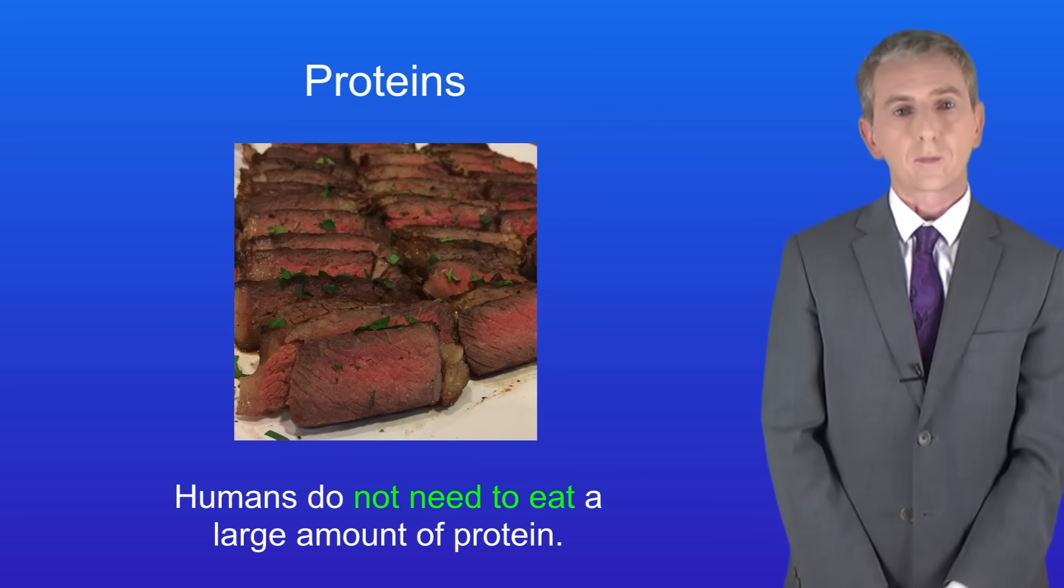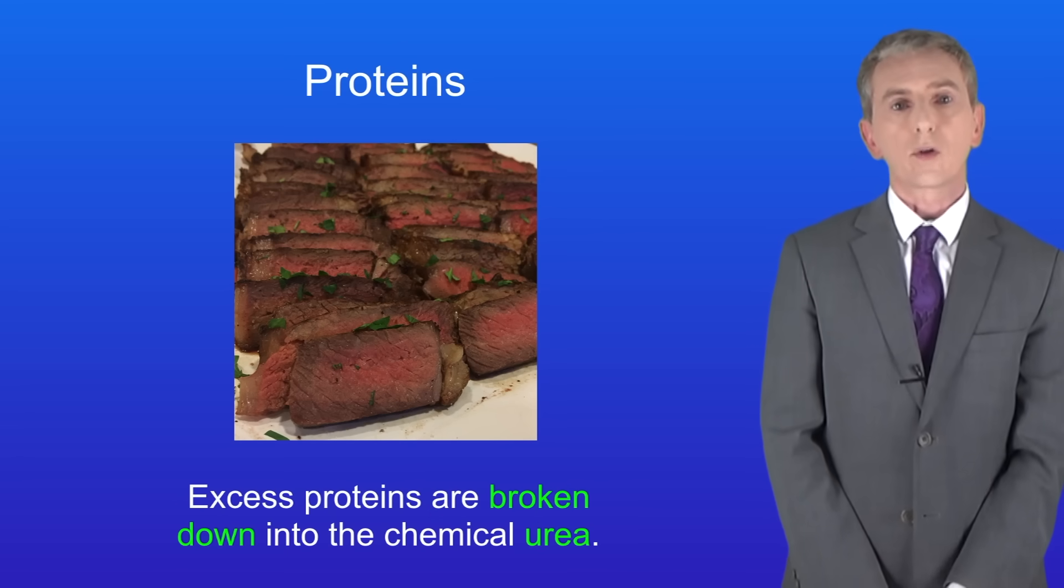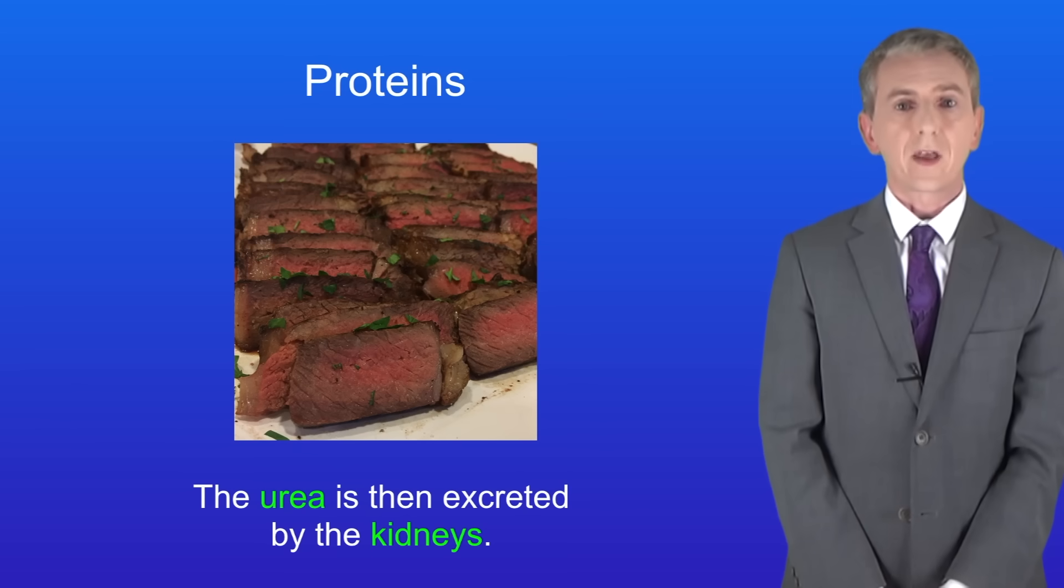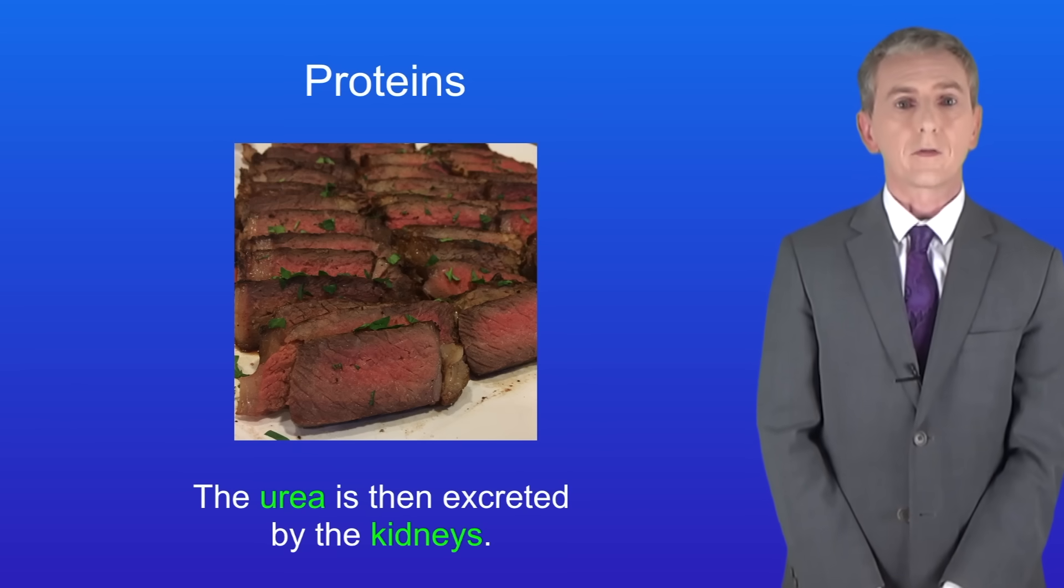The final reaction of metabolism involves proteins. Humans don't need to eat a large amount of protein. Excess proteins are broken down into the chemical urea and the urea is then excreted by the kidneys and we'll be looking at excretion in a later video.